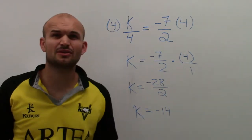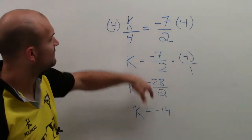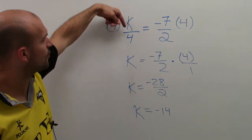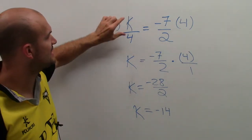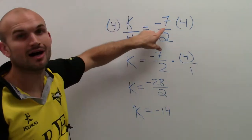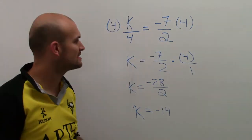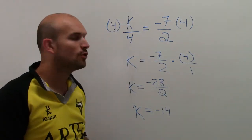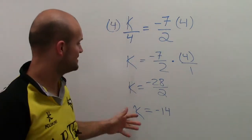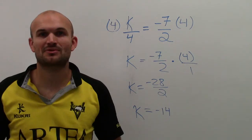Let's take a look at that and see if that really makes sense. If I put negative 14 in for k, you can see that they would be equivalent equations. So your solution is negative 14.